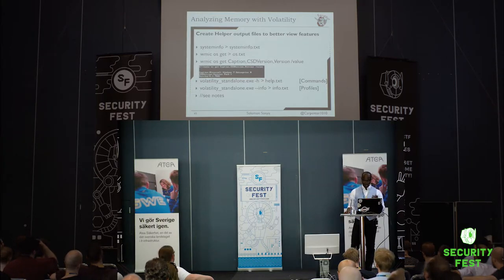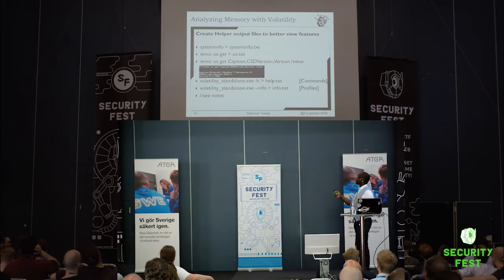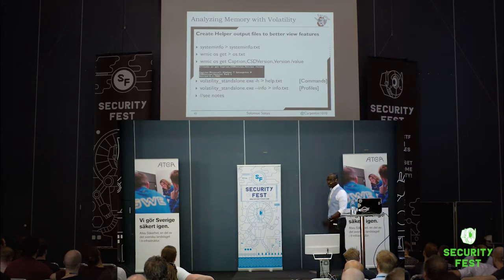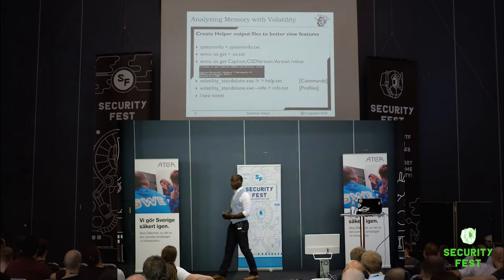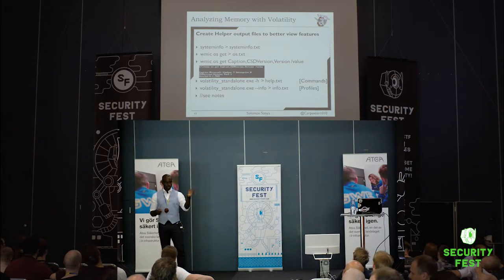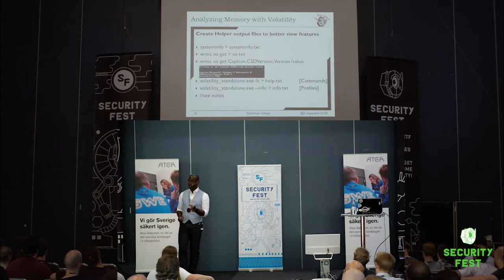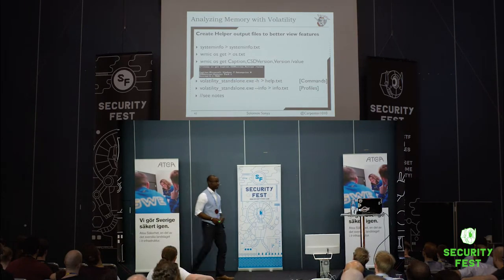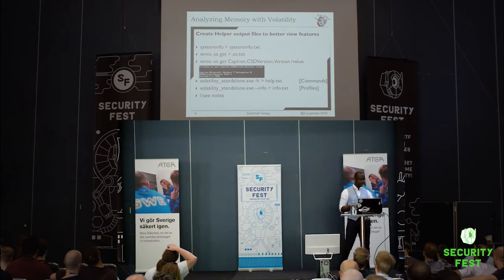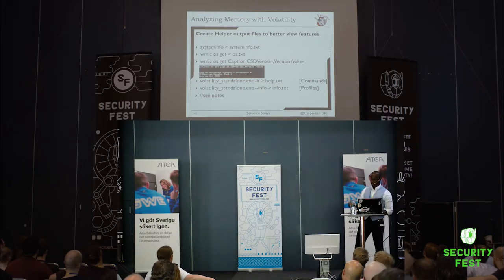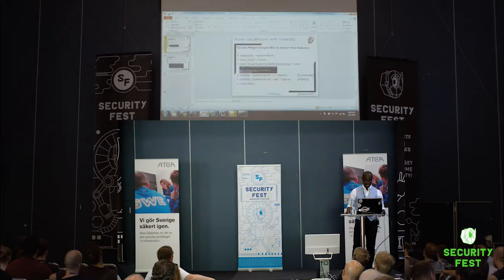Volatility requires knowing the profile of the machine being analyzed. Different operating systems and service packs have different kernel structures, so Volatility needs to know how to go into the kernel linked list to extract running programs. You have to specify the specific profile, load it into Volatility, and continue. Let's go ahead and begin that process now.